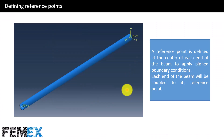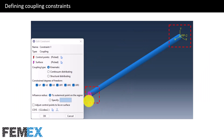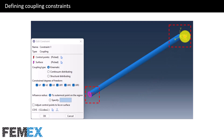Now I want to talk about defining reference points. A reference point is defined at the center of each end of the beam to apply pin boundary conditions. Each end of the beam will be coupled to its reference point. I have defined a coupling constraint between the reference point and the end face, and I will define another coupling constraint between RP2 and its relevant face. Now I go to Abaqus to show you these settings.